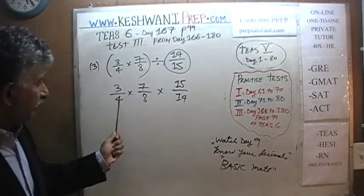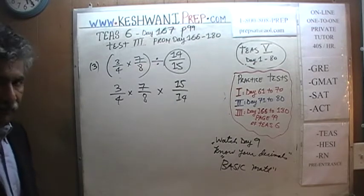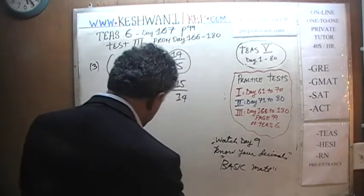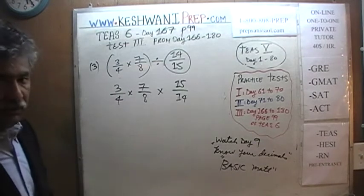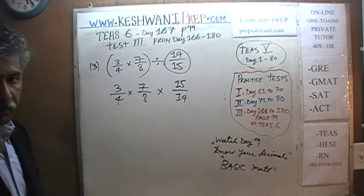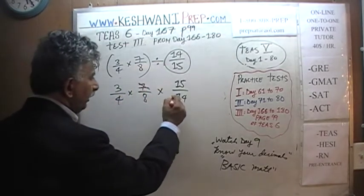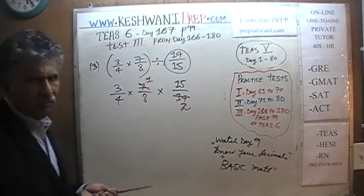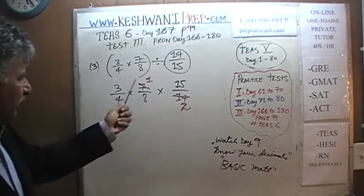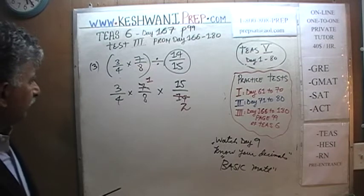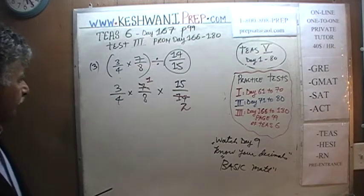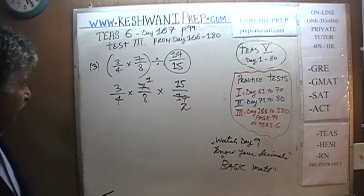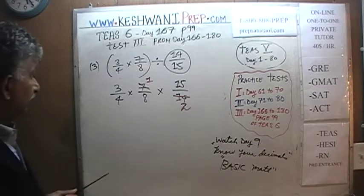Don't just multiply everything out right away, because you'll be here forever. See if we can reduce anything first. I see a 7 and I see a 14. Since 14 is 2 times 7, let's divide top and bottom by 7. The 7 goes away — it becomes 1, though you don't need to write that down — and the 14 becomes 2. Anything times 1 is just the thing itself. Do you see anything else we can simplify? Strangely enough, I don't see anything else.